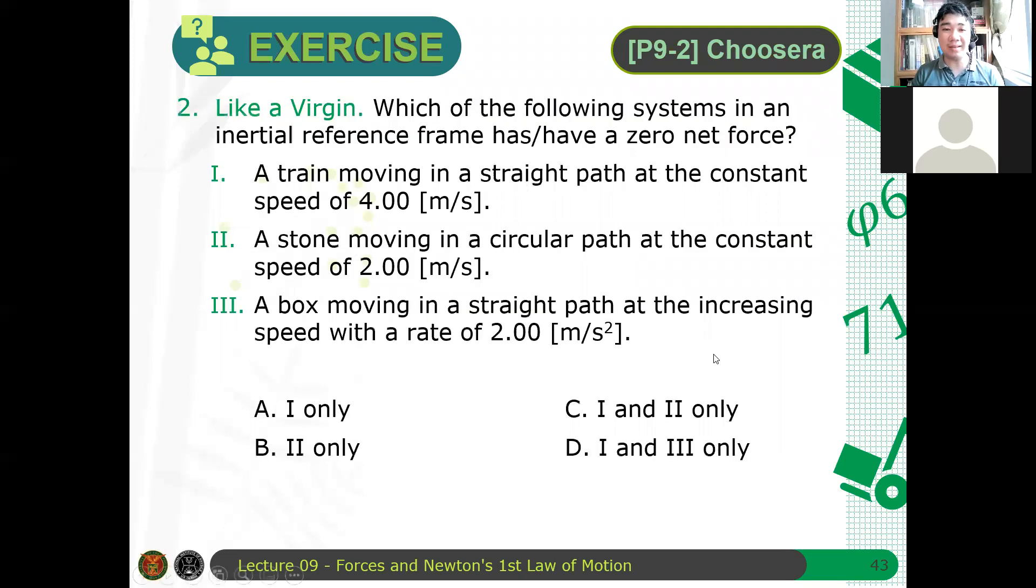Like a virgin, which of the following systems in an inertial reference frame has or have a zero net force? First, a train moving in a straight path at the constant speed of 4 meters per second. Second, a stone moving in a circular path at a constant speed of 2 meters per second. And number three,